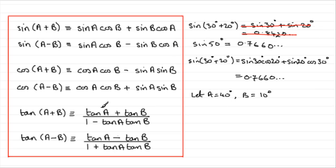You could do the tan of A plus B, tan of 50 degrees once more. Tan of 40 degrees plus 10 degrees, according to the identity, will be tan A plus tan B, so that would be tan 40 degrees plus tan 10 degrees, all divided by 1 minus tan A tan B, tan 40 degrees times tan 10 degrees.